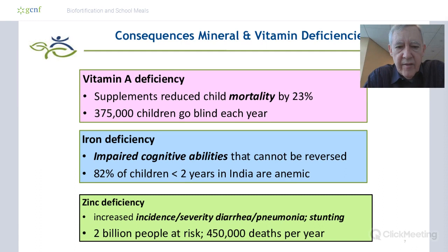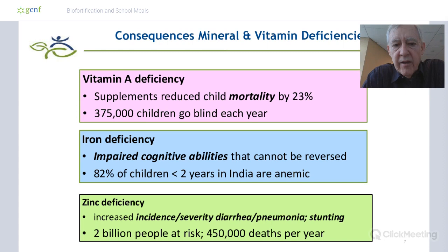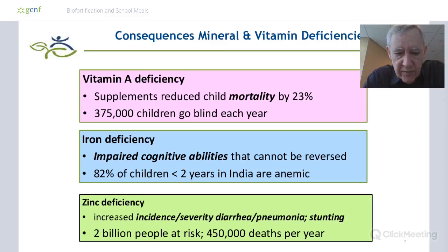This is just some of the magnitude of the problem. Vitamin A supplementation trials showed 30 years ago that by administering one vitamin supplement every six months to preschool children, child mortality could be lowered by 23%. It's estimated that 375,000 children go blind each year from vitamin A deficiency, and once that serious, most of those children will also die soon after going blind.